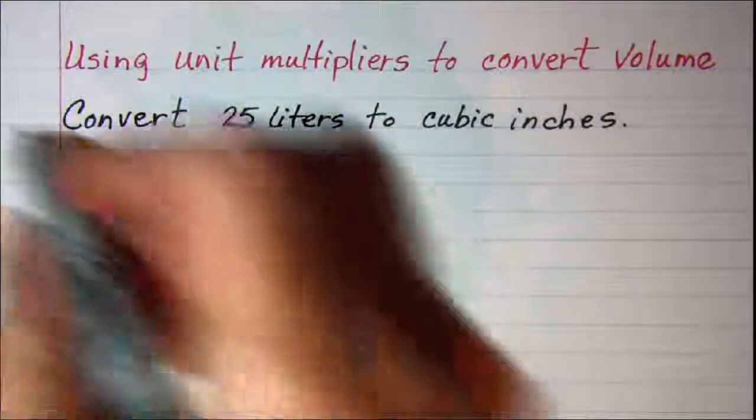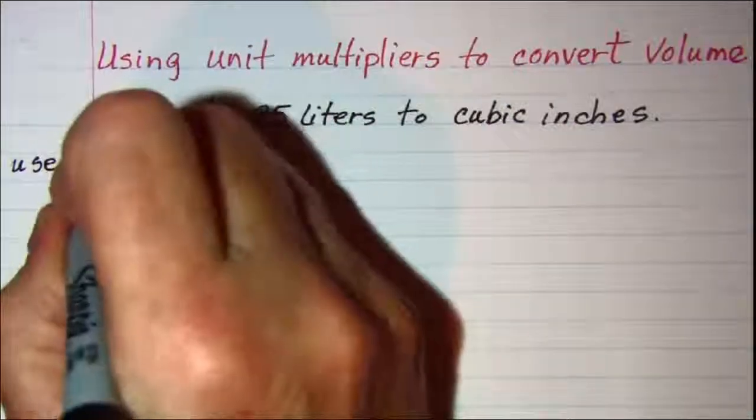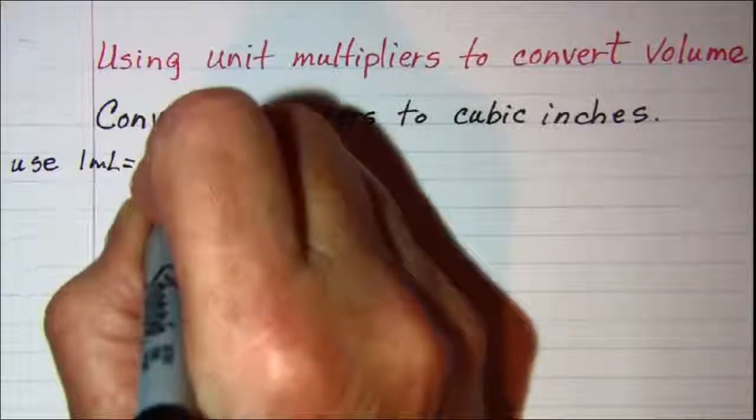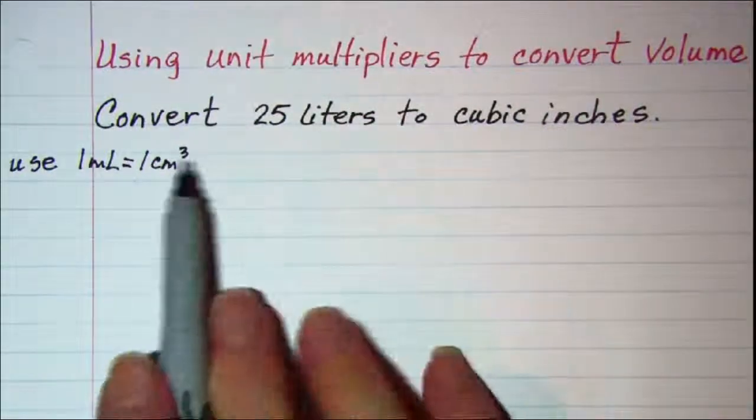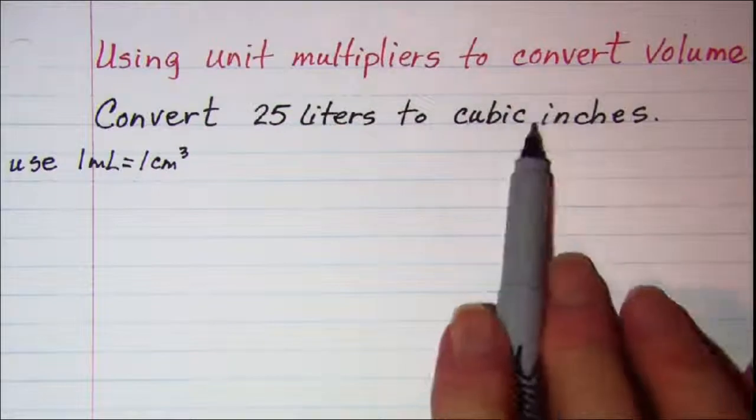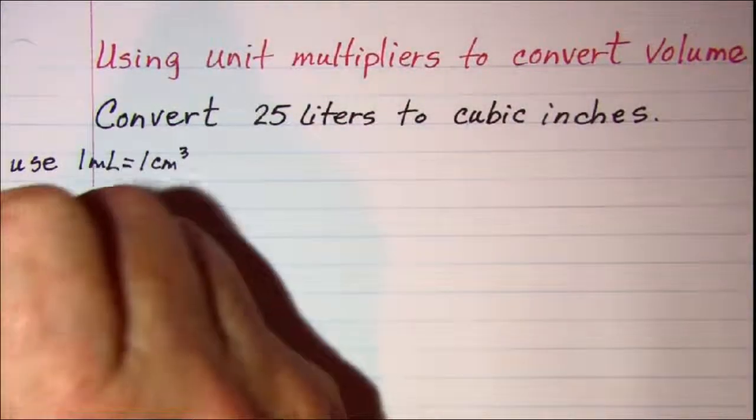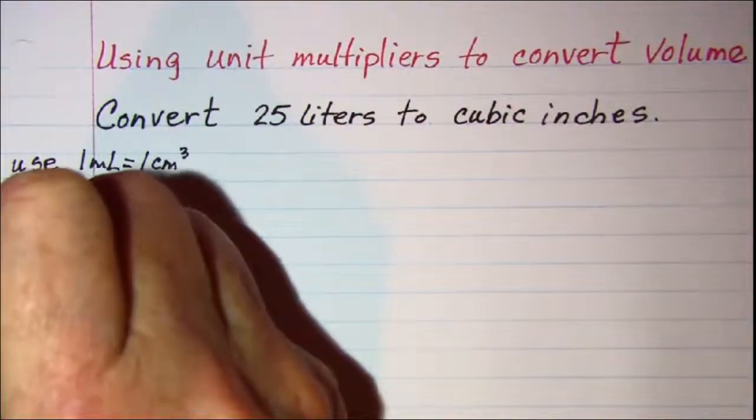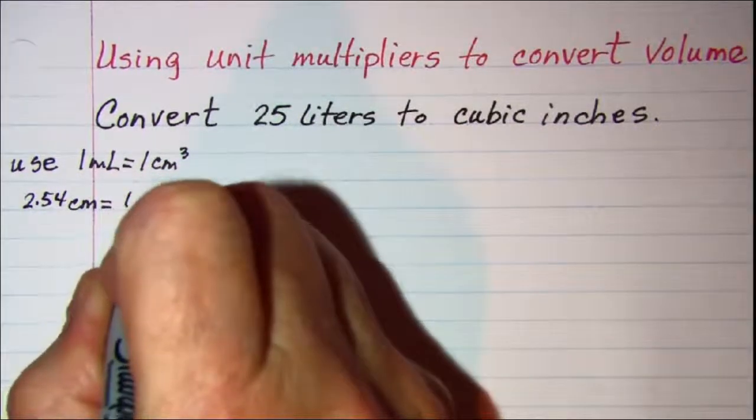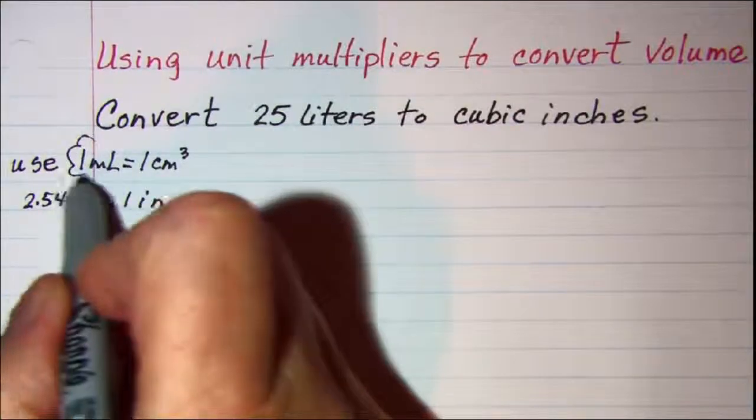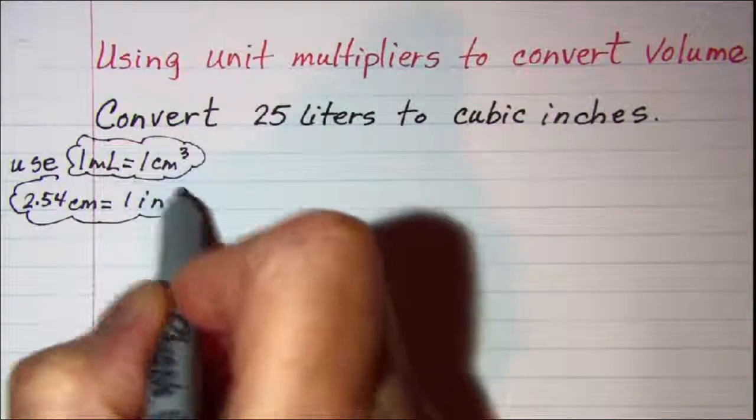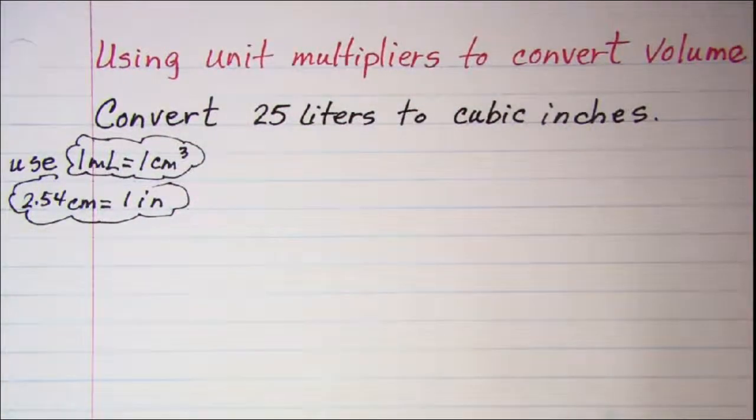So we are going to need to use 1 milliliter is equal to 1 cubic centimeter. Now I know we are not wanting to go to cubic centimeters, but we can then use the fact that 2.54 centimeters is equal to 1 inch. So we are going to use these two equivalences in unit multipliers to convert.